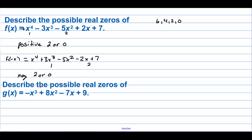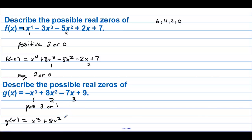Describe the possible real zeros of g of x. We have one sign change, two sign changes, three sign changes — so the positive zeros are 3 or 1, because we knock that down by 2. Now I need g of negative x: that's going to be x cubed plus 8x squared plus 7x plus 9. So there are zero negative zeros.